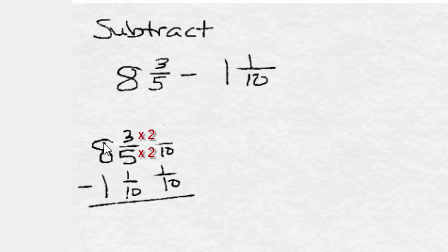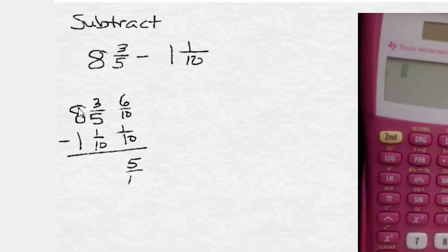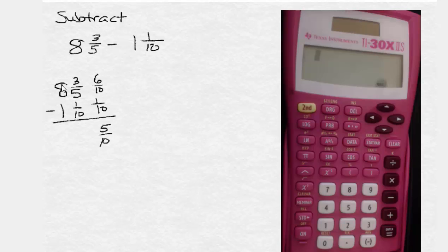Writing equivalent fractions, 3 fifths is the same as 6 tenths, so we would subtract 6 tenths minus 1 tenths, giving us 5 tenths. We would subtract 8 minus 1, giving us 7. Reducing, we have 7 and 1 half. Now, this approach can lead to needing to borrow from time to time, and that can get messy.